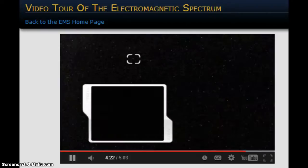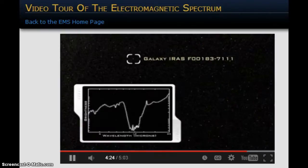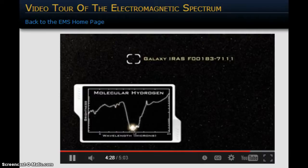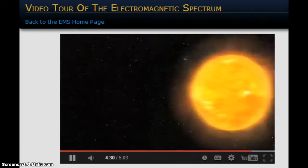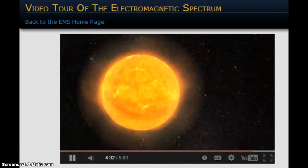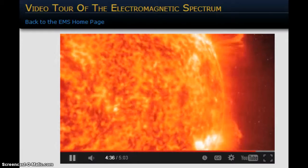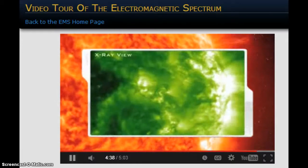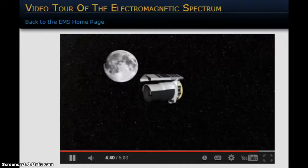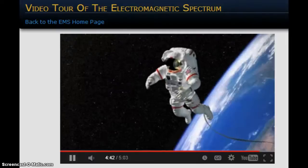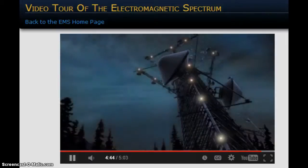NASA's Spitzer Space Telescope observed the presence of water and organic molecules in a galaxy 3.2 billion light-years away. Viewing our sun in multiple wavelengths with the SOHO satellite allows scientists to study and understand sunspots that are associated with solar flares and eruptions harmful to satellites, astronauts, and communications here on Earth.